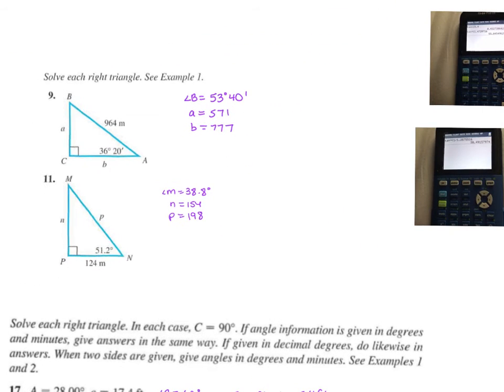Let's focus in on solving the right triangle. For number 9, the first thing we want to find is angle B. I can do 90 minus 36 degrees and 20 minutes, and I get B, 53 degrees and 40 minutes. Then, I always want to stick with what's given to me at the beginning. I've got angle A, and I've got side C. If I want to find side A, that would be opposite and hypotenuse. So, sine of 36 degrees, 20 minutes, equals opposite, which is A, over the hypotenuse, which is 964. We want to multiply both sides by that 964.